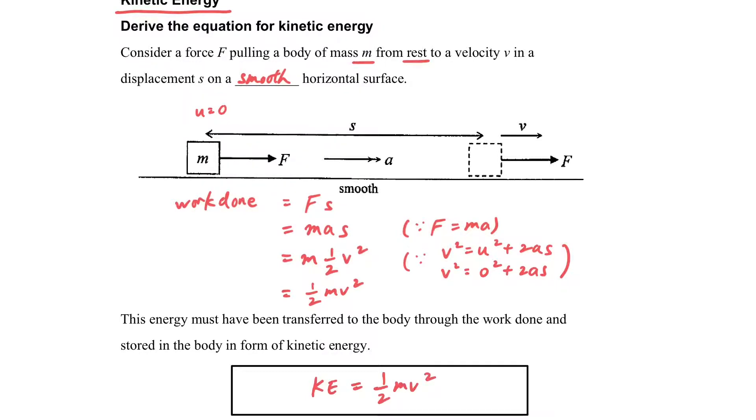If we know the speed of an item, then we can know the kinetic energy. This is the way we derive the kinetic energy by using the force and displacement.